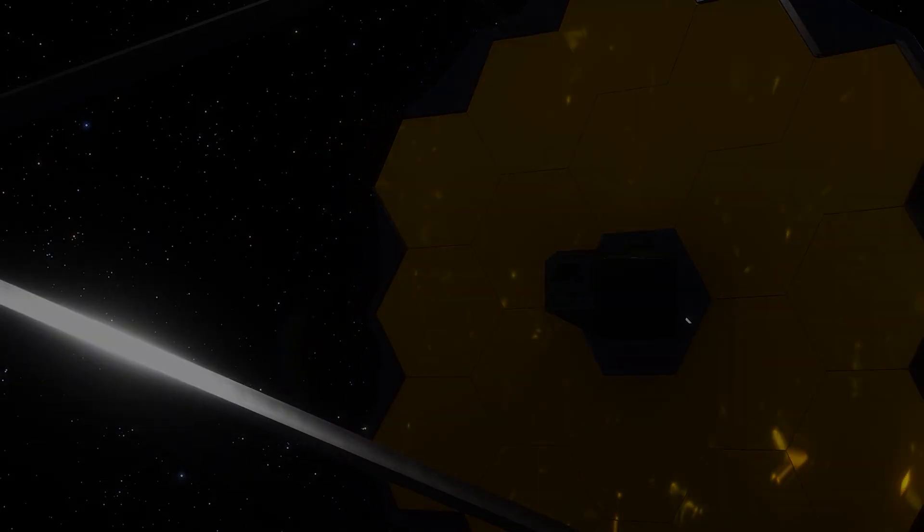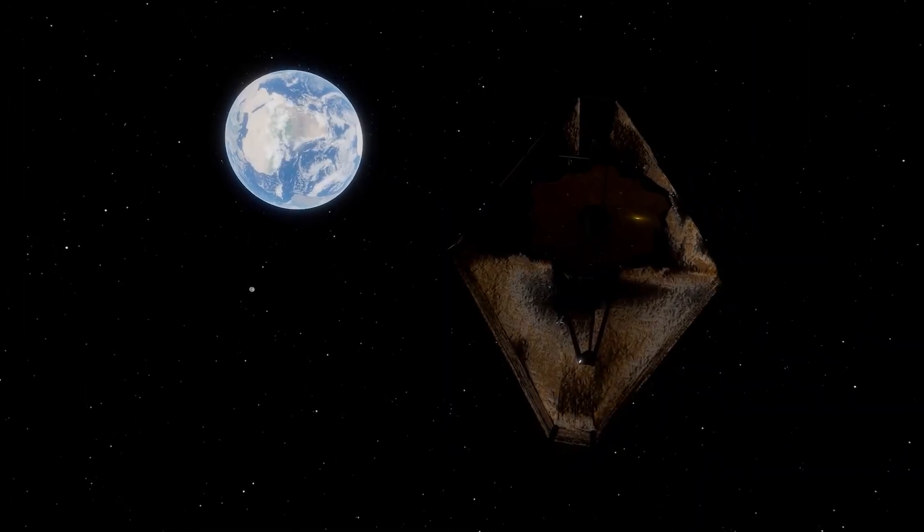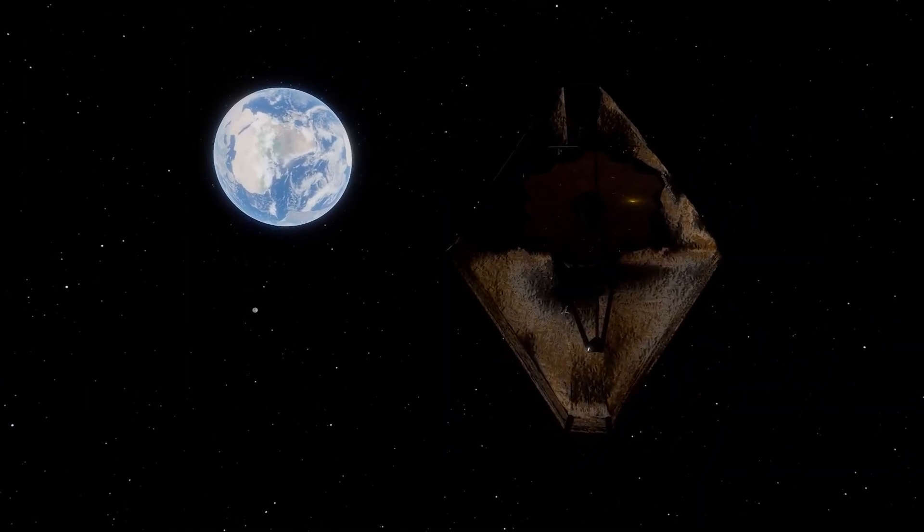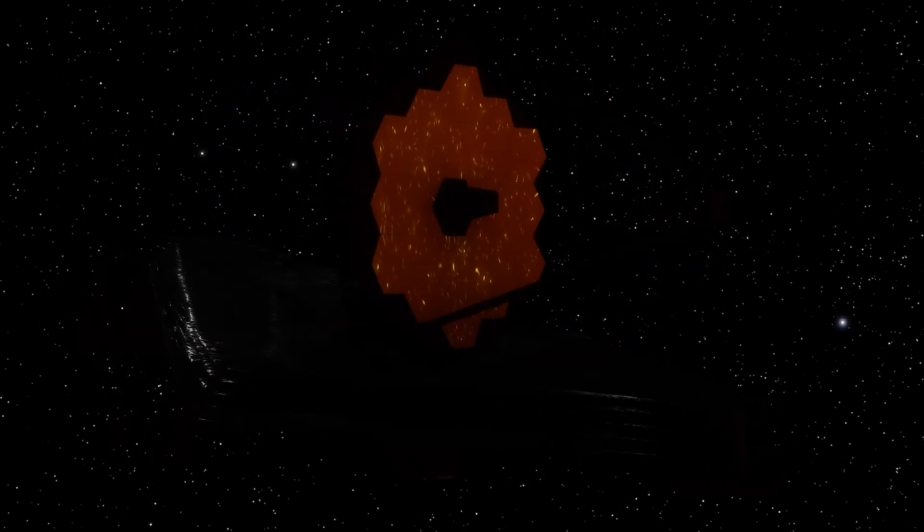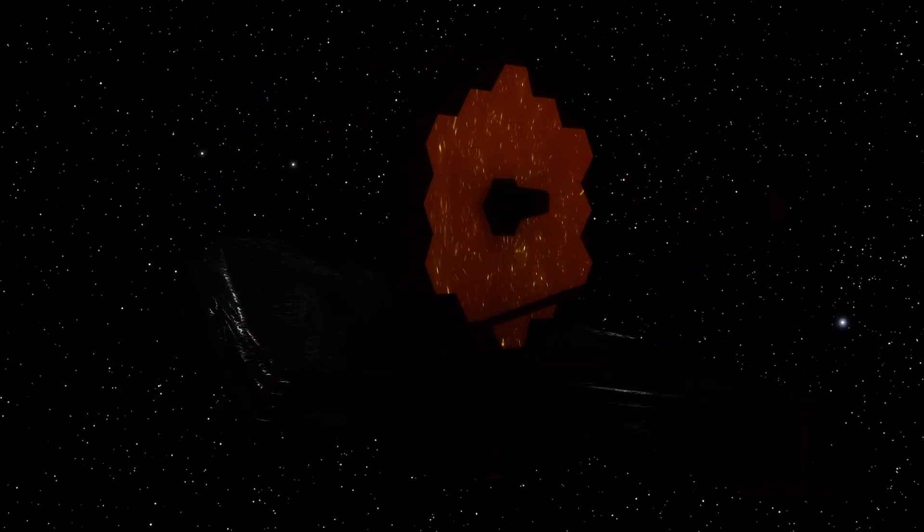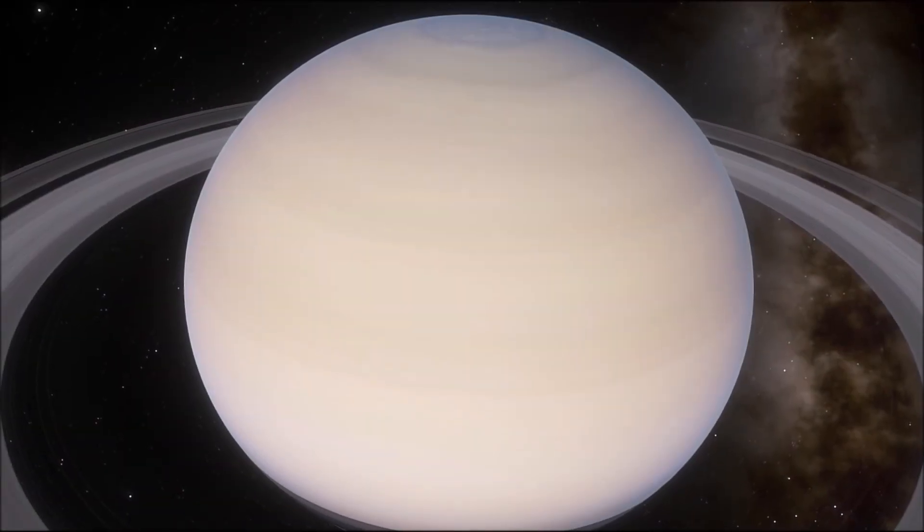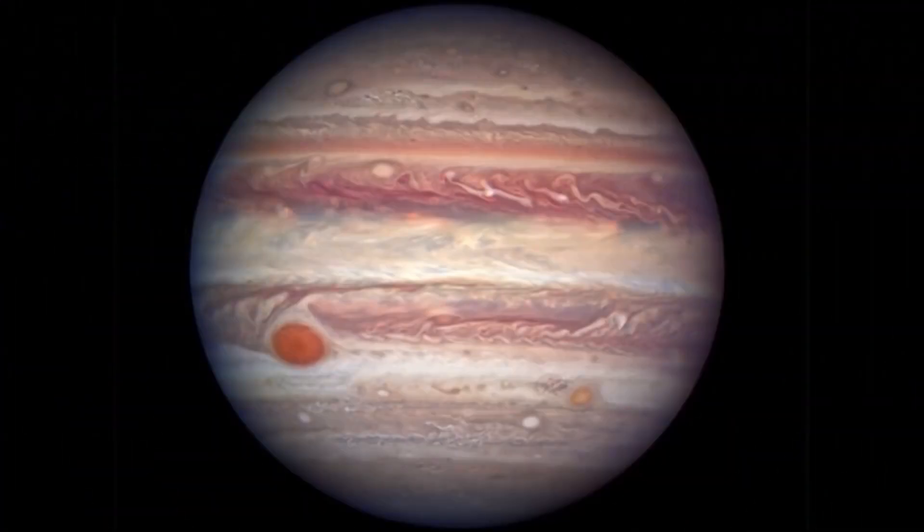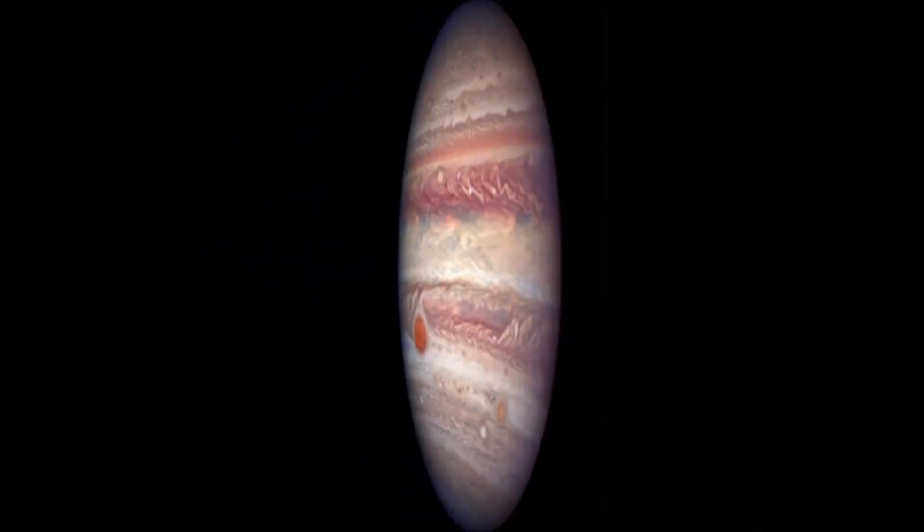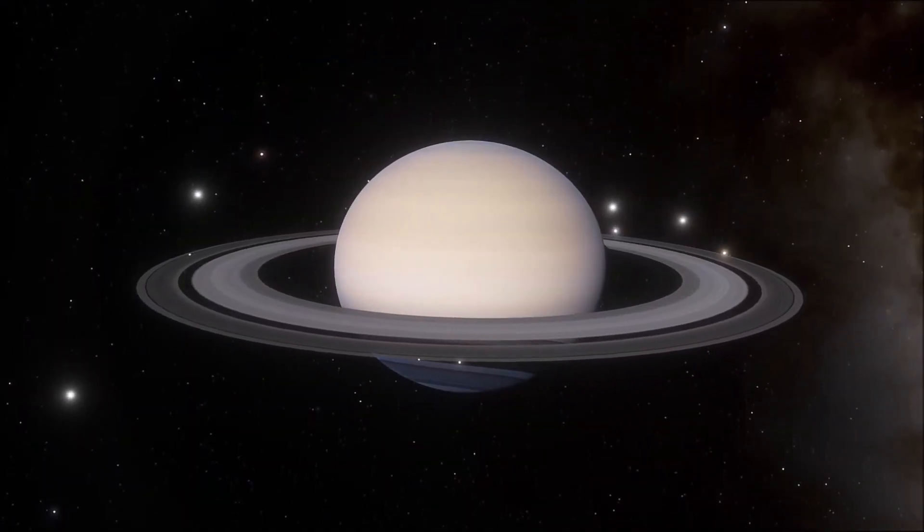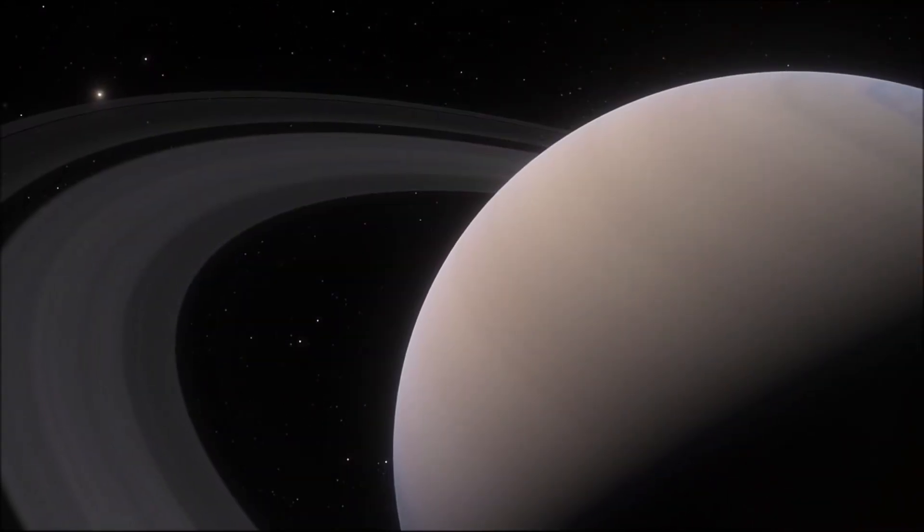The James Webb Space Telescope, the JWST, is the most advanced telescope ever built, being a hundred times more powerful than its predecessor. With its help, we will be able to unlock the secrets of this vast expanse of the universe. In the past, we have discovered a wide variety of planets, from small rocky worlds to gas giants larger than Jupiter, as well as extremely hot planets and habitable ones.